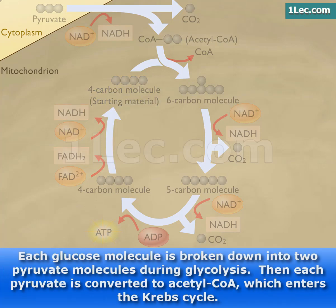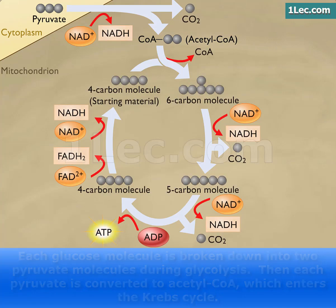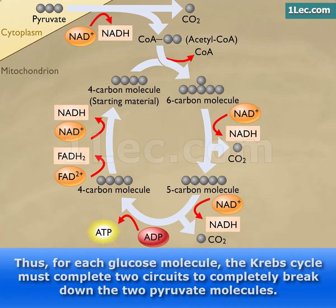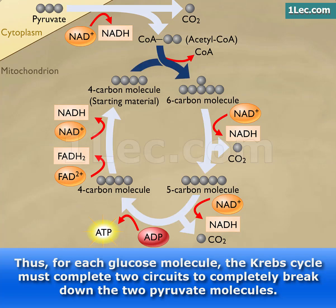Each glucose molecule is broken down into two pyruvate molecules during glycolysis. Then, each pyruvate is converted to acetyl CoA, which enters the Krebs cycle. Thus, for each glucose molecule, the Krebs cycle must complete two circuits to completely break down the two pyruvate molecules.